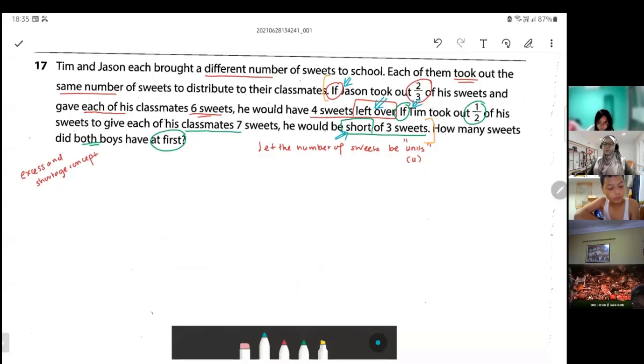When there are two ifs and you see the word left over, shortage, excess, extra, balance, and you have two ifs, then it is excess and shortage concept. These are the keywords. So I'm going to draw my table first.